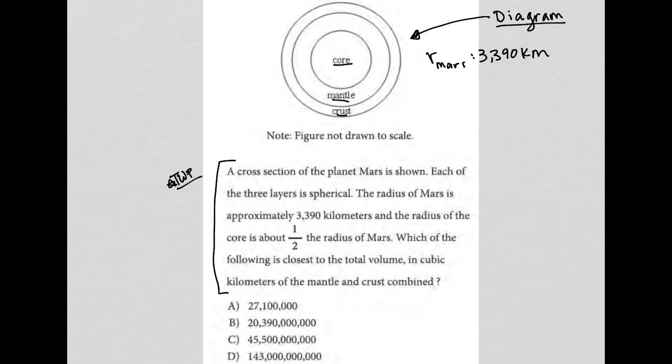And the radius of the core is about half the radius of Mars. So, our core, we go to our calculator and we get 1,695 kilometers for the radius of the core. So, this guy here, 1,695, but this whole thing is 3,390.